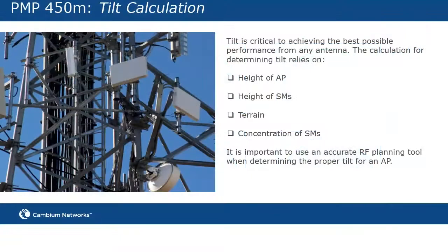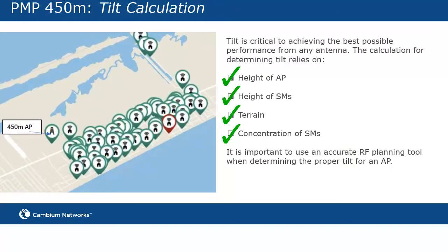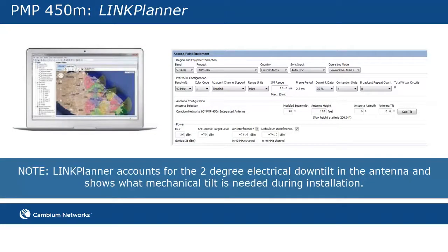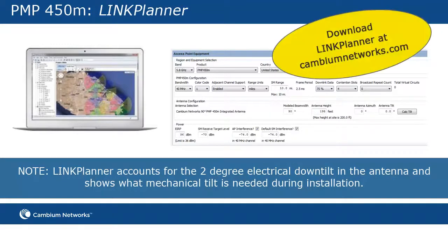Tilt is critical to achieving the best possible performance from any antenna. The calculation for determining tilt relies on height of the AP, height of the SMs, terrain, and concentration of SMs. It's important to use an accurate RF planning tool when determining the proper tilt for an AP. LinkPlanner, a free tool by Cambium Networks, is one such application. Its capabilities include importing subscriber modules into the tool and running a calc tilt analysis, where each angle is evaluated to see which is the best.